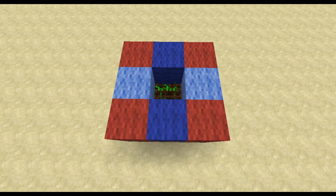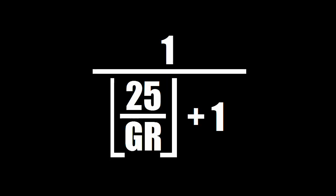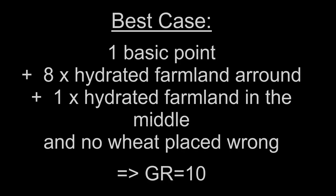The growth rate now gets used in a random call. If you are interested in the math: we take 25, divide it by our growth rate, round it down, add 1, and then we divide 1 by our growth rate. And that's our chance for the wheat to grow to the next stage. That means in the best case scenario, we have a chance of approximately 33% that our wheat will grow on an update.